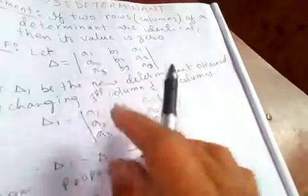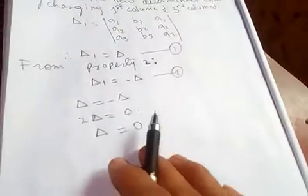So this delta is our original determinant, so this determinant is nothing but zero. It is equal to zero.